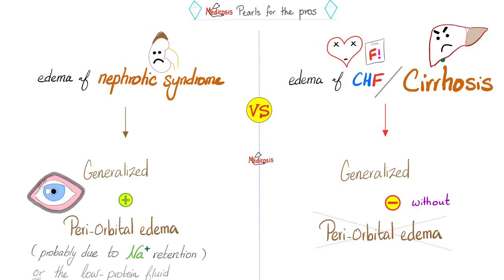Kidney disease, heart disease, and liver disease can all cause edema. But the edema of kidney disease usually has periorbital edema, whereas the edema of CHF and cirrhosis usually does not.